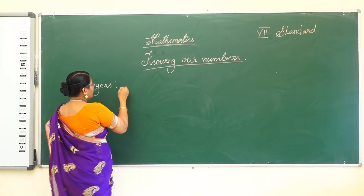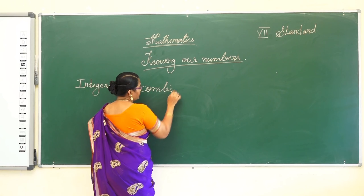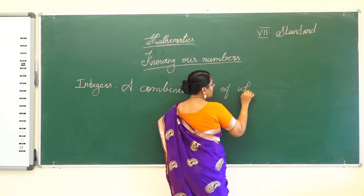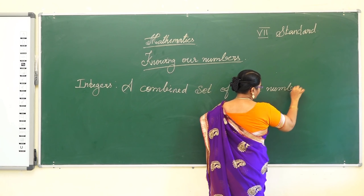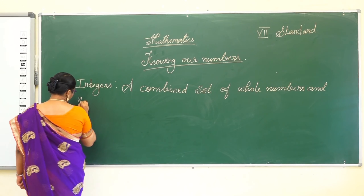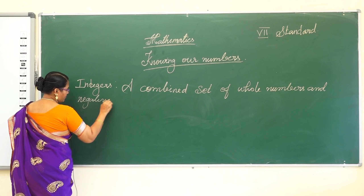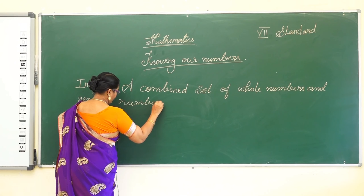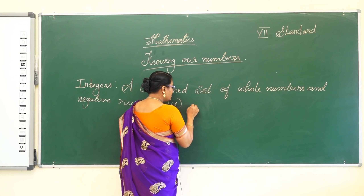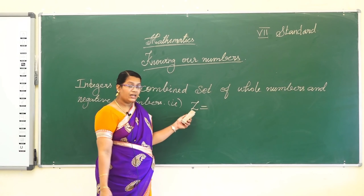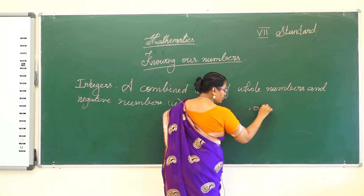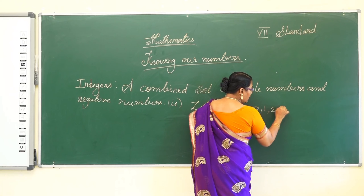What is the meaning of integers? A combined set of whole numbers and negative numbers. The integer is denoted by Z. The set of whole numbers: 0, 1, 2, 3, etc.